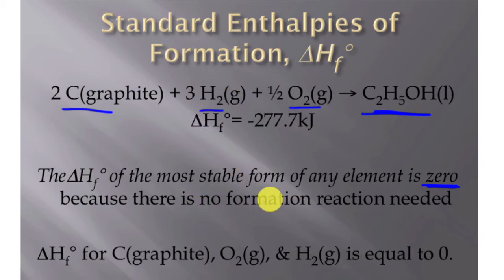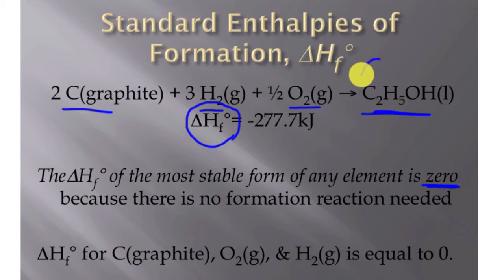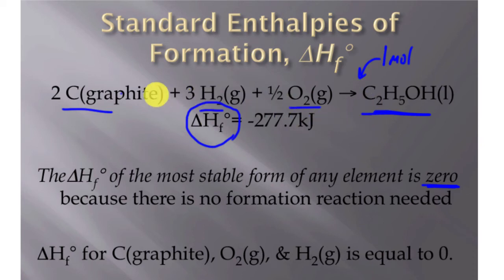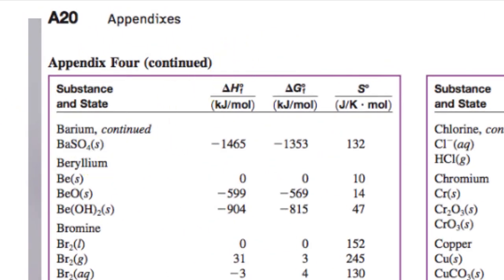The most stable form of any element has a change in enthalpy of zero, because it's already formed — we don't need any energy to form something that already exists. So elements are the baseline. The notation ΔHf — with a little 'f' — means we are forming this compound from its elements. This reaction is always written to produce one mole of substance, which is why we sometimes have a one-half coefficient: the table gives the enthalpy to create one mole of substance.